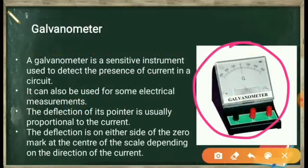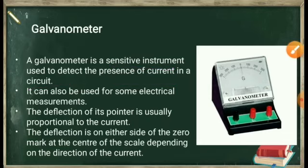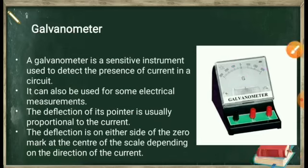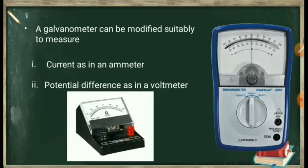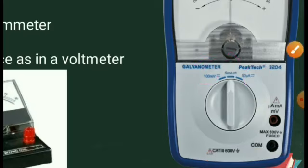A galvanometer is a sensitive instrument used to detect the presence of current in a circuit. It can also be used for electrical measurements. The deflection of its pointer is proportional to the current, and the deflection is on either side of zero. The scale is equally marked on both sides of the center. A galvanometer can be modified to measure current in amperes or potential difference as a voltmeter, with scales in millivolts, milliamperes, and microamperes.